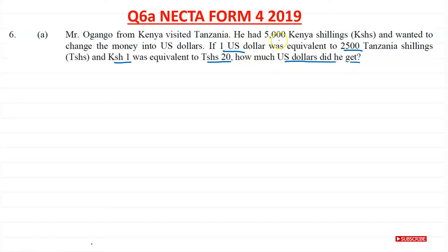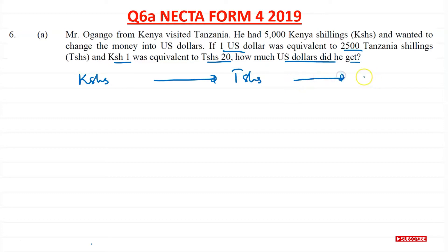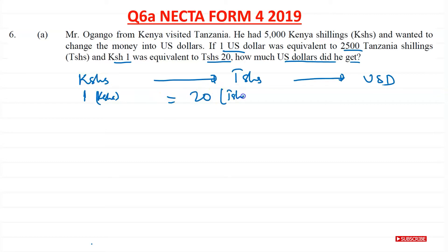He has 5,000 Kenyan shillings and he wants to change them into dollars. Because he is in Tanzania, what needs to happen is we need to take his Kenyan shillings and change them into Tanzanian shillings first, and then change them into US dollars. So we need to do this first step. We're told 1 Kenyan shilling is equal to 20 Tanzanian shillings.